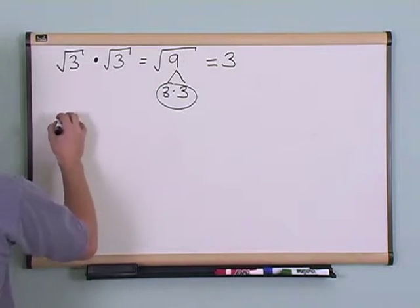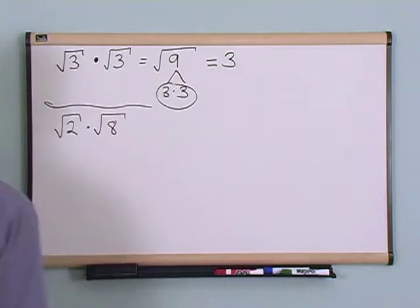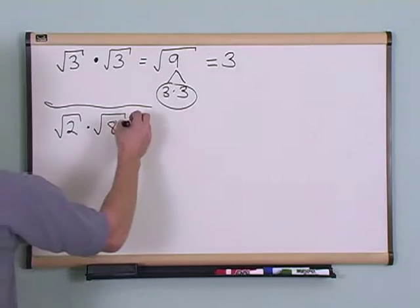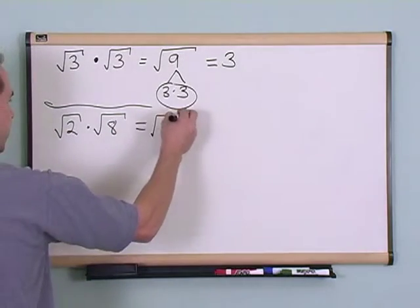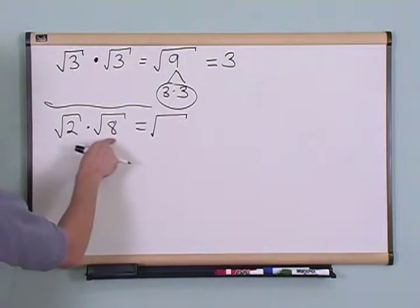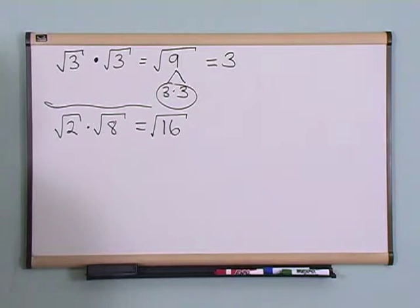What if you had square root of 2 times square root of 8? I want you to use the principle we just talked about, which is very simple. You write another radical sign down, and you take what's underneath, and you multiply them together. 2 times 8 is 16, so you put that underneath a new radical.